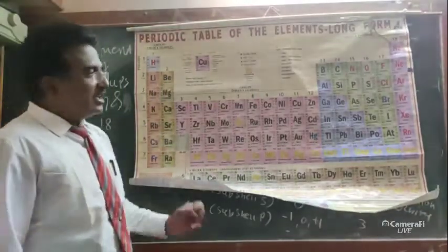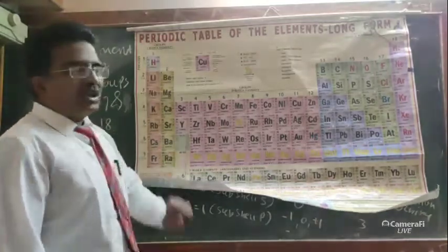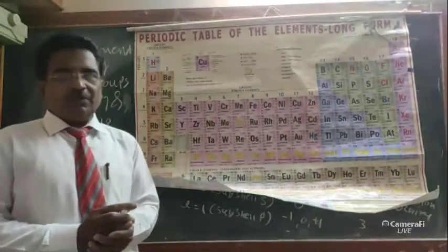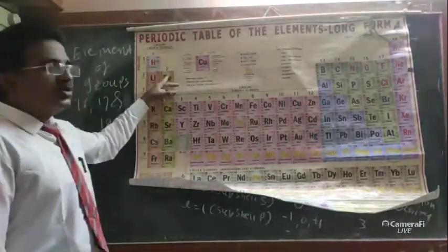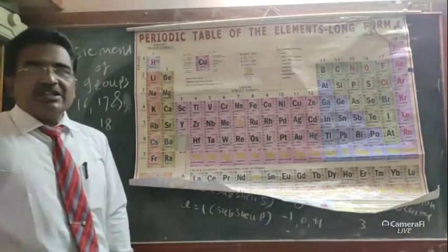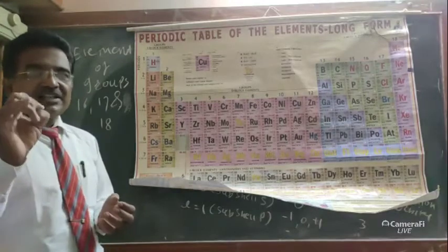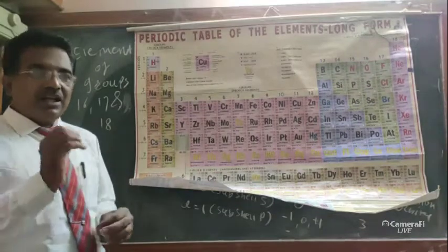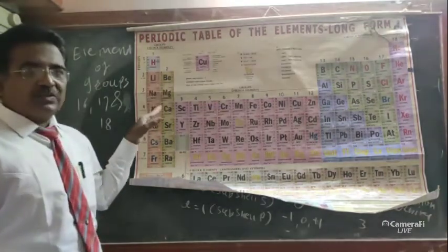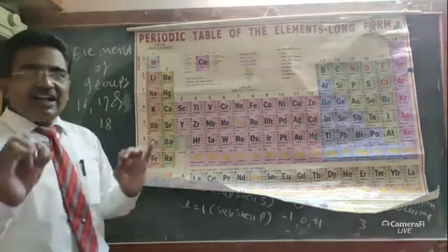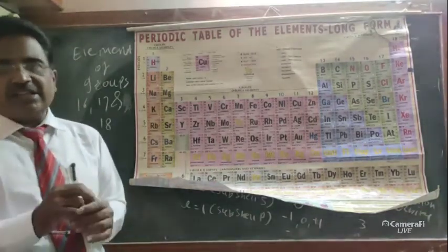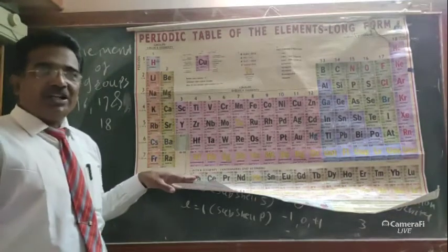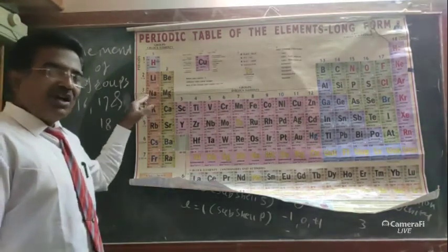In the periodic table, elements are arranged into blocks. The S-block elements have their electrons present in the S orbital.